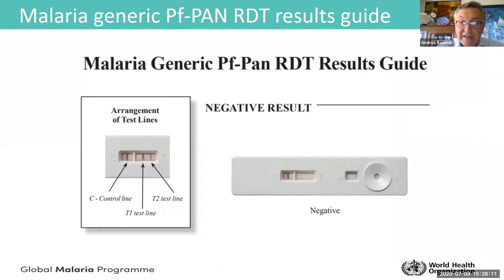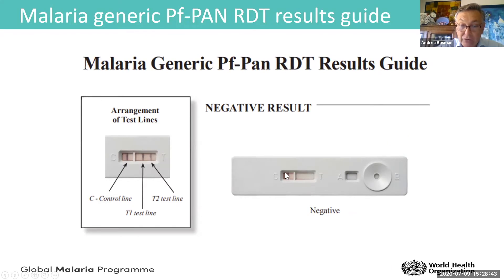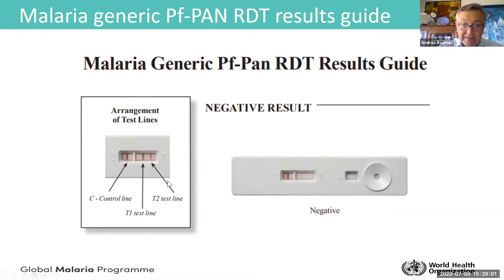As shown in the video, we put the blood in well A and the buffer solution in well B. This is followed by migration along the nitrocellulose strip, which is why we call it an immunolateral flow assay. This is the test window and this is the control window. If there is no line in the test window, the test is negative.